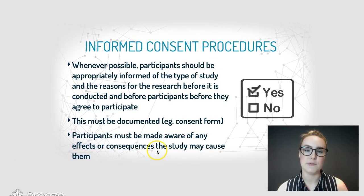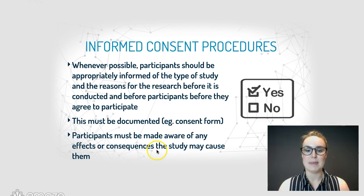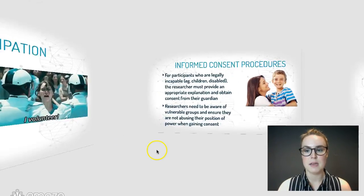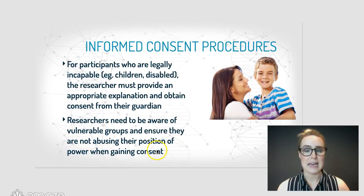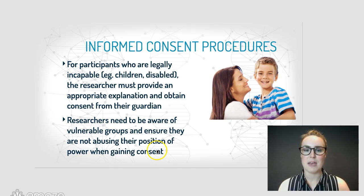The next principle is informed consent procedures. Wherever possible, participants should be given information about what they're actually going to be taking part in. It needs to be documented, they need to sign it, and they need to be aware of any possible side effects or negative consequences of the study. For people who are incapable of providing consent — such as children or disabled people — a guardian needs to sign for them. Researchers also need to be aware of vulnerable people and not misuse their power as a researcher when gaining consent.